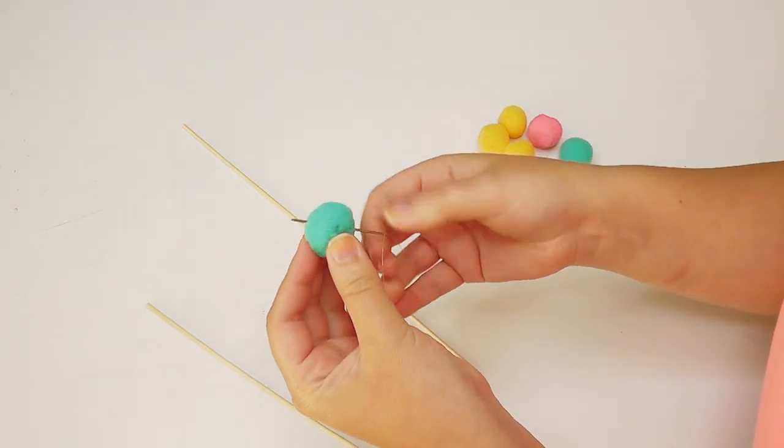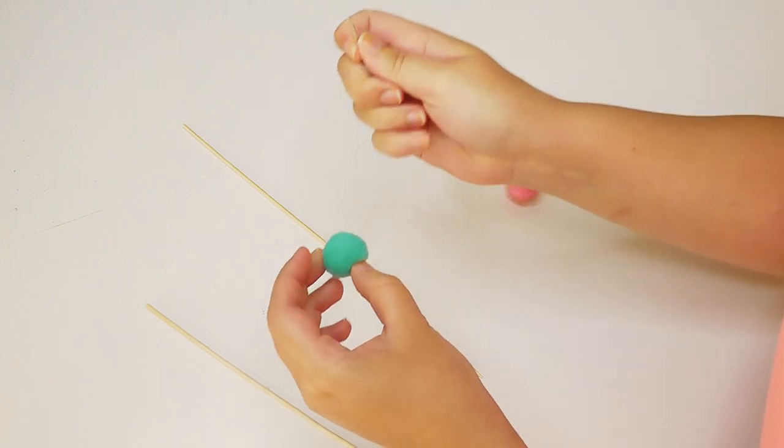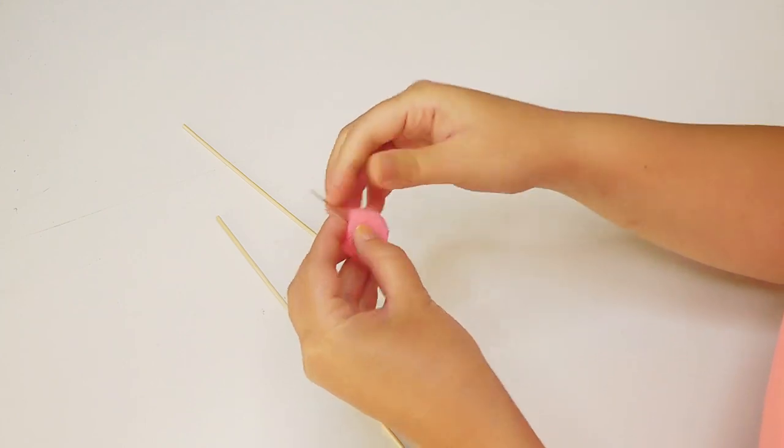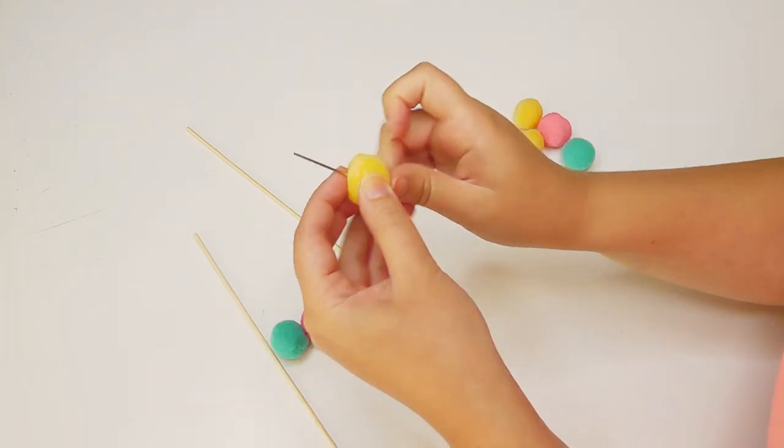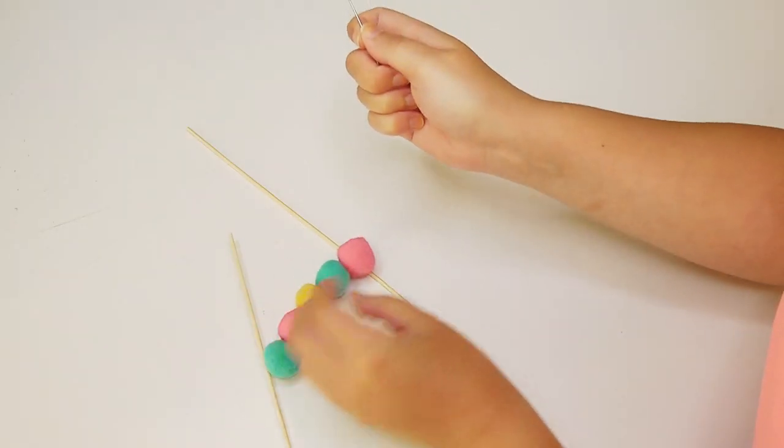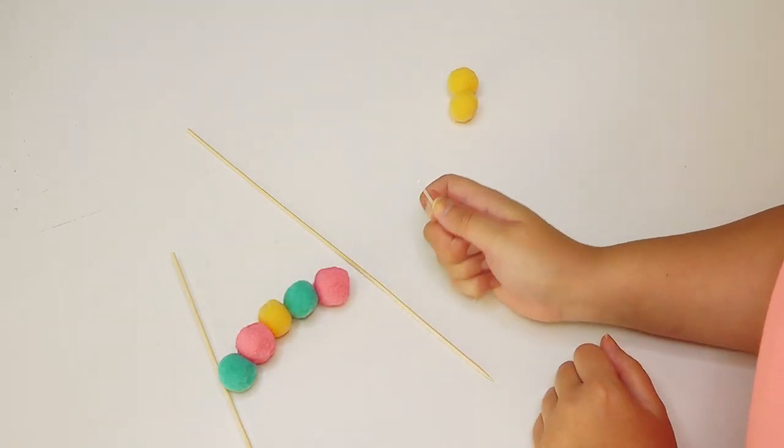Push your needle through the centre of your pom poms and thread them on in whatever pattern you like. You need to keep two spare for the tops of your sticks.